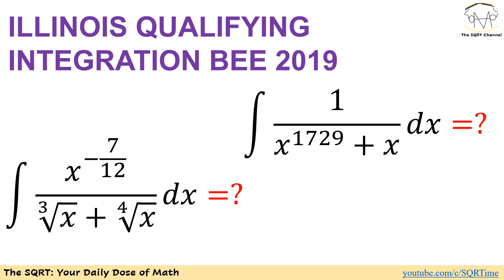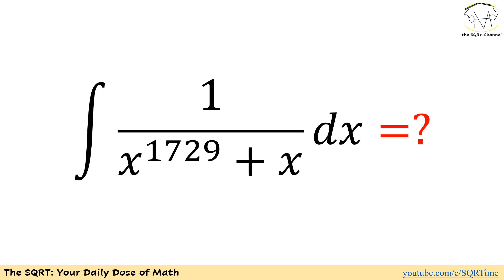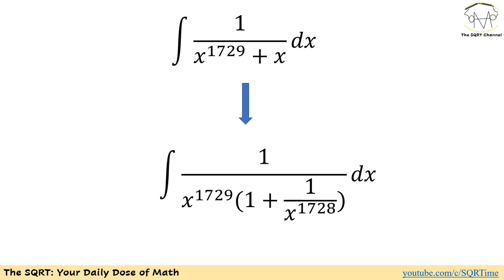Let's talk about the solution now. To solve the first problem I'm going to factor out something first and then use a replacement. To solve this problem I'm going to factor out x to the power of 1729 from the bottom of this fraction. This leads to the integral of 1 over x to the power of 1729 times 1 plus 1 over x to the power of 1728 dx.